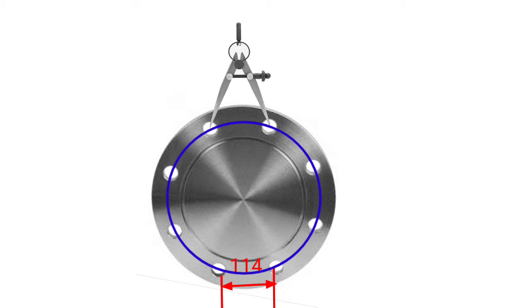Make a circle with the PCD and then take 114 mm. By using divider you will get 8 holes. All 8 holes equal chord length, that means 114 mm.